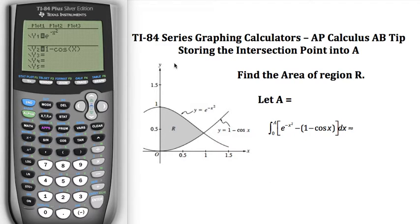Let's suppose that we've got this region right here and they are asking us to find the area. You would integrate from zero to the intersection point of the top curve minus the bottom curve, so I have that all set up here.